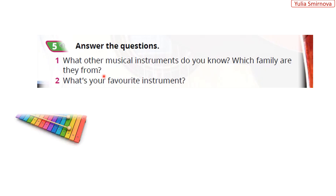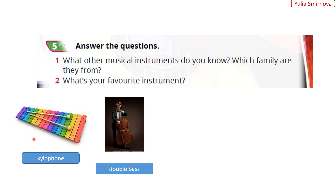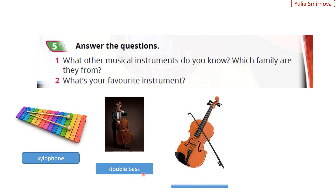It's a percussion instrument – xylophone це ударний інструмент. Double bass is a stringed instrument – контрабас струнний інструмент. Violin is a stringed instrument, too – скрипка теж струнний інструмент.